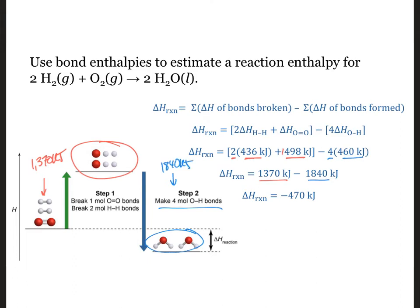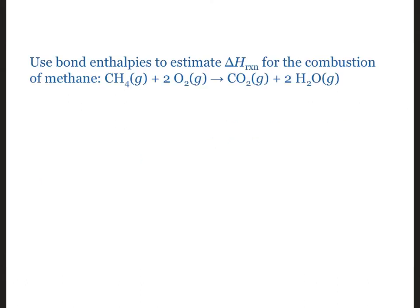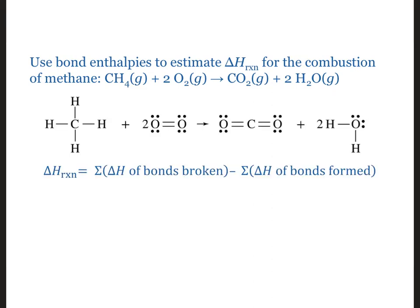Let's try another example. To calculate the delta H of reaction for the combustion of methane, we need to start by drawing Lewis structures of the reactant and product molecules to identify which bonds are broken and which bonds are made during the reaction. Each bond in the Lewis structure represents one mole of bonds. Next, count up how many of each type of bond we need to make or break.